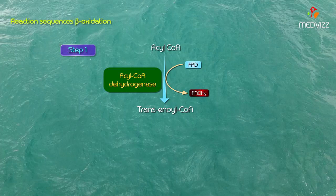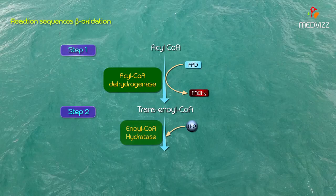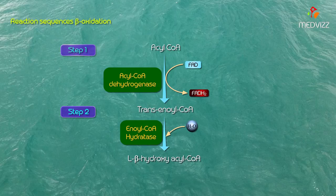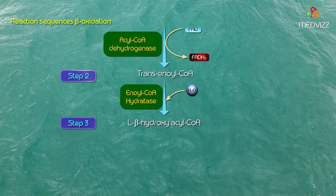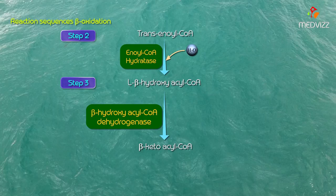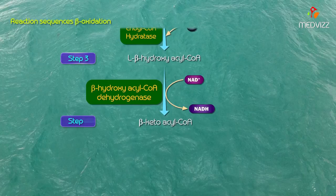In step 2, addition of a water molecule by the enzyme enoyl CoA hydratase to trans-enoyl CoA results in the production of L-beta-hydroxyacyl CoA. In step 3, this beta-hydroxyacyl CoA is converted to beta-ketoacyl CoA by the enzyme beta-hydroxyacyl CoA dehydrogenase, where NAD+ is reduced to NADH.